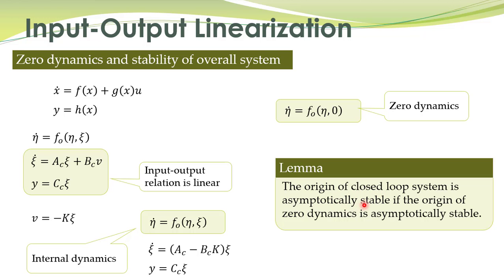There is a lemma which states that the origin of the closed-loop system is asymptotically stable if the origin of the zero dynamics is asymptotically stable. Since we have designed the gain matrix such that the linear part is stable, instead of studying the full internal dynamics we can study the stability of the zero dynamics. If zero dynamics are asymptotically stable, then the origin of the whole system will also be asymptotically stable.